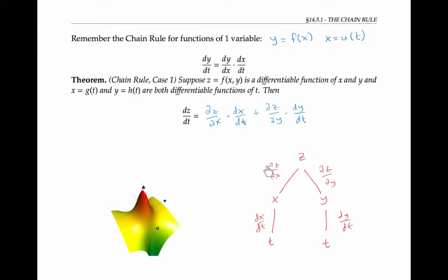Notice that the partial symbol is used for variables that depend on more than one other variable, and the regular derivative sign is used for a variable that just depends on a single variable.